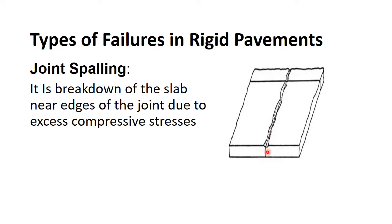Additional causes include freeze-thaw cycles, excess stress at the joint due to wheel load, and joints that accumulate water resulting in rapid freezing and thawing. Partial depth and full depth repairs are the remedies for shallow and deep spalling respectively.